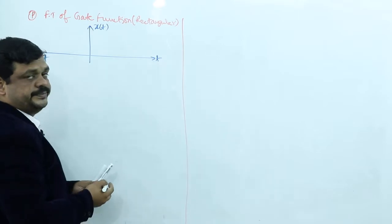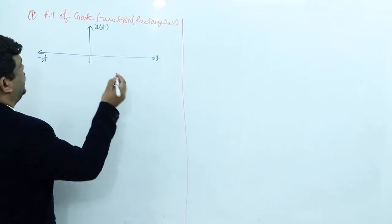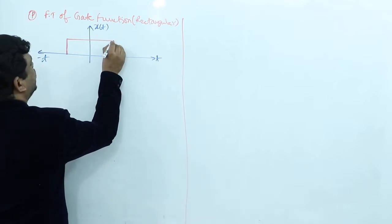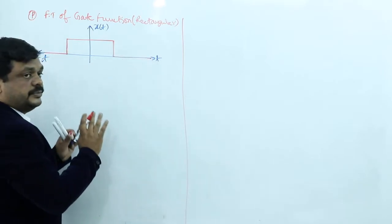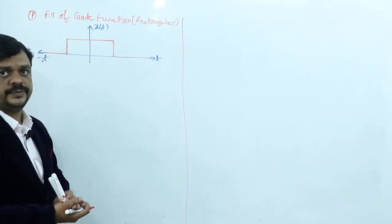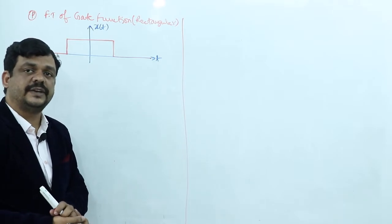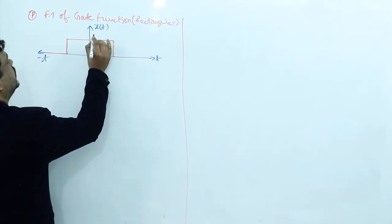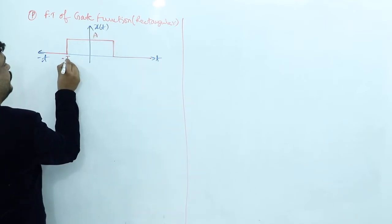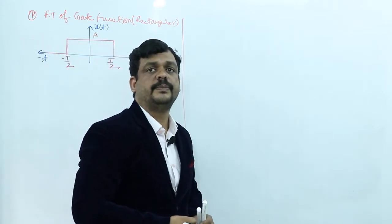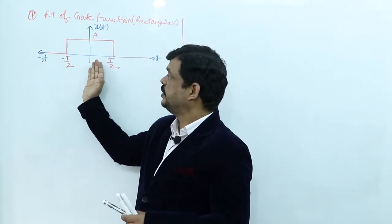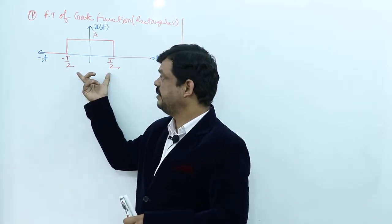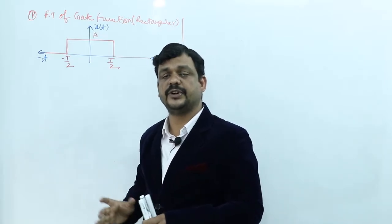The gate function is defined in a particular time period with constant amplitude — zero on both sides outside that period. I am taking the limits from minus T/2 to plus T/2, so the total time period is T. On the negative time axis it starts at minus T/2, and on the positive side it ends at plus T/2, with constant amplitude within these limits.